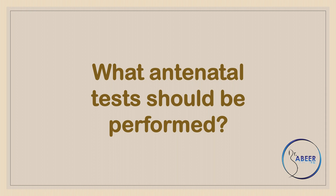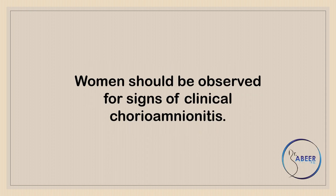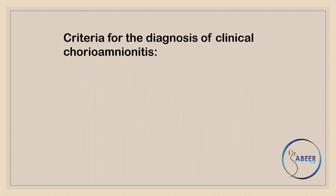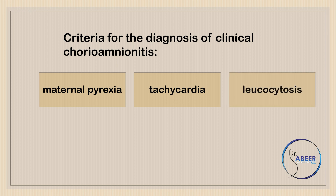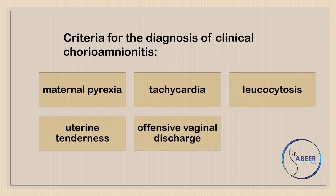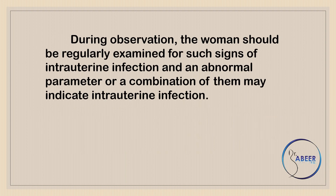Women should be observed for signs of clinical chorioamnionitis. The criteria for the diagnosis include maternal pyrexia, tachycardia, leukocytosis, uterine tenderness, offensive vaginal discharge, and fetal tachycardia. During observation, the woman should be examined for such signs of intrauterine infection, and an abnormal parameter or a combination of them may indicate intrauterine infection.